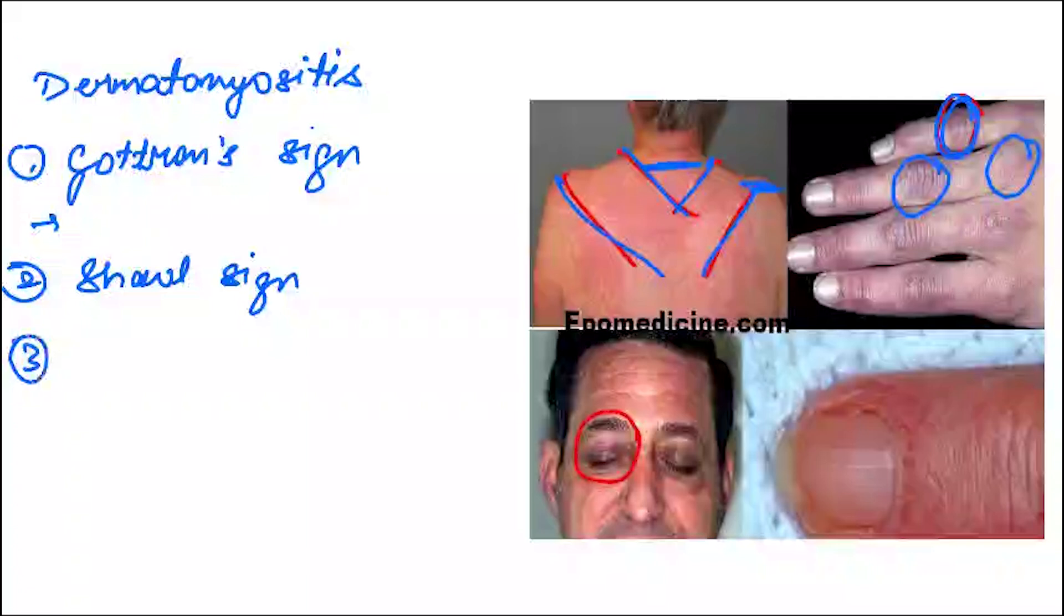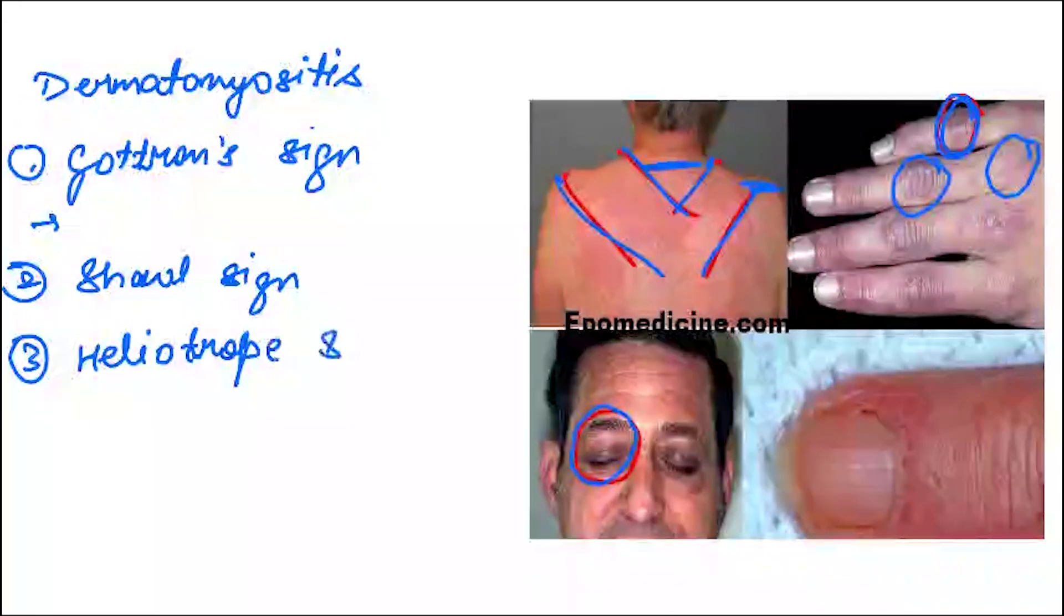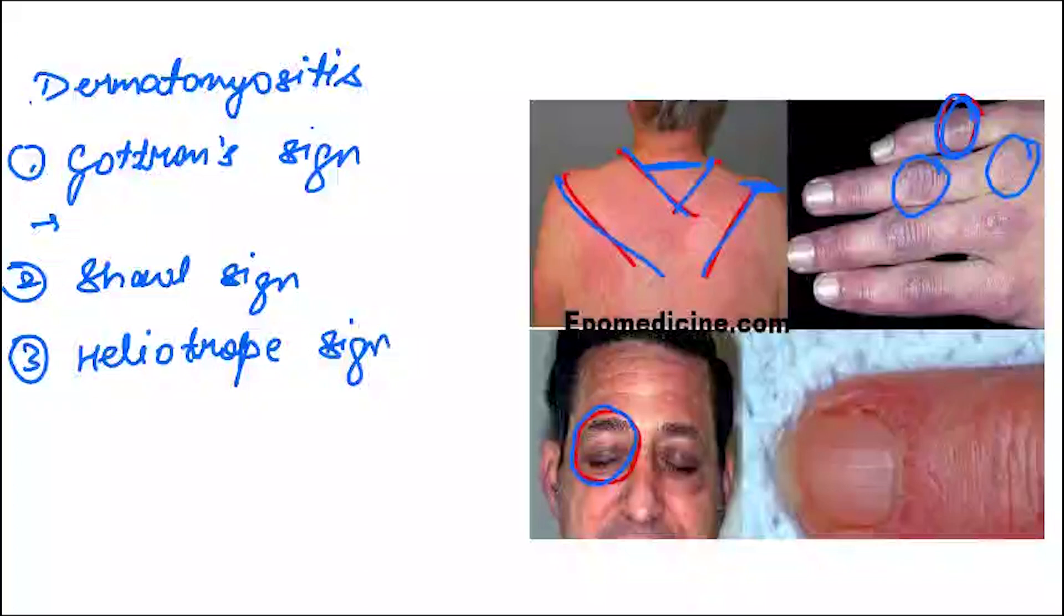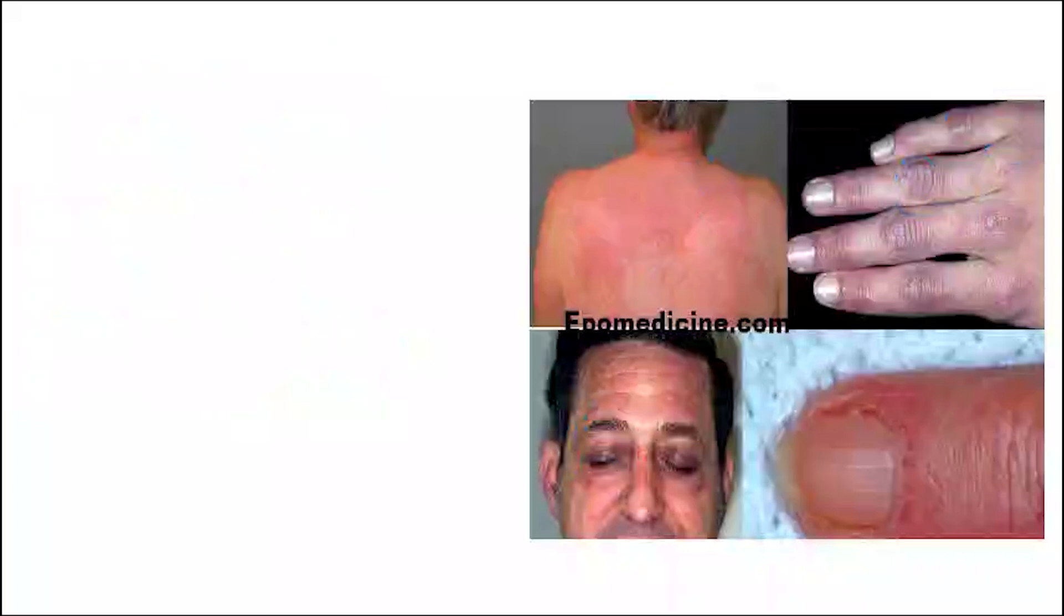Next, you can see the heliotrope sign. These are very important clinically also. You will see patients of dermatomyositis coming in like this. When the similar flat pink to violaceous erythema is present over the periorbital area, it is known as heliotrope sign. That's all for today. Thank you so much for watching this video.